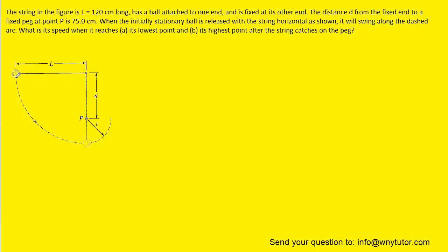To do that we need to identify the types of energy that are initially present and then also that are finally present once the object reaches its lowest point. Initially, because the object is released from rest, the only energy present is gravitational potential energy, u sub g.